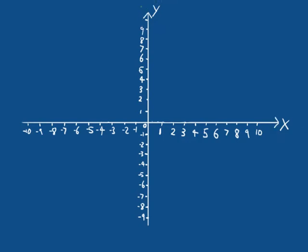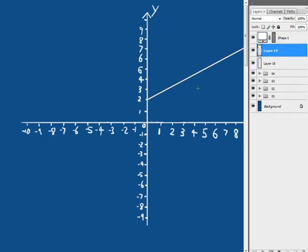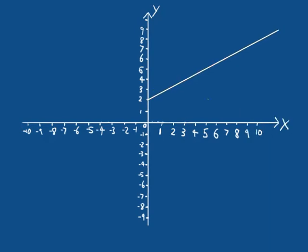In order to answer that question, we need to think about what exactly is a straight line. A straight line is nothing more than a linear relationship between our X and our Y axes. Let me draw a line in our 2D space and discuss that idea further. A straight line is nothing more than a linear relationship between X and Y.